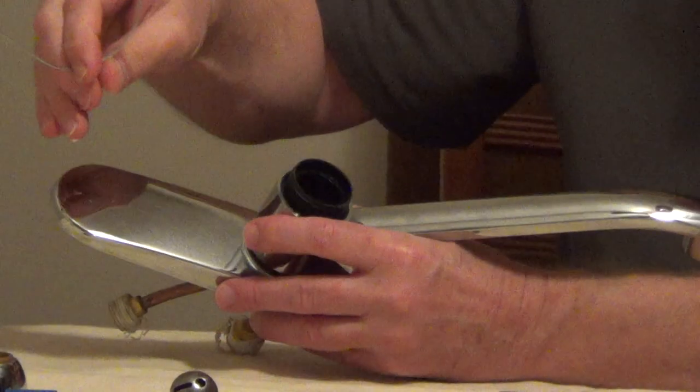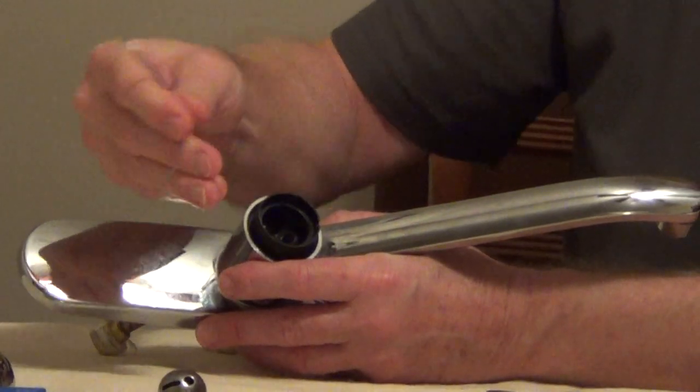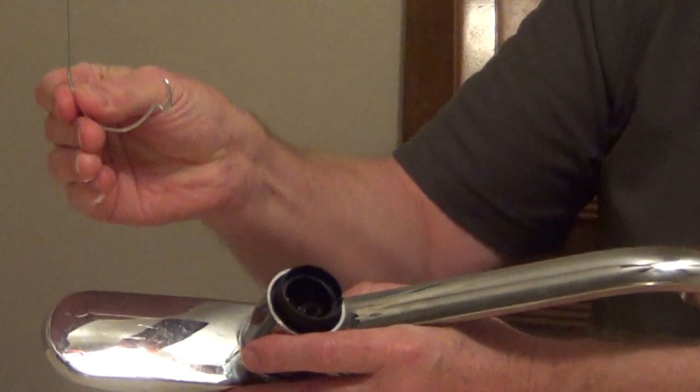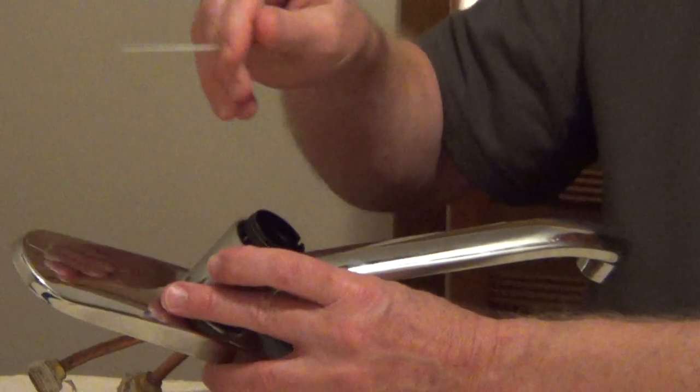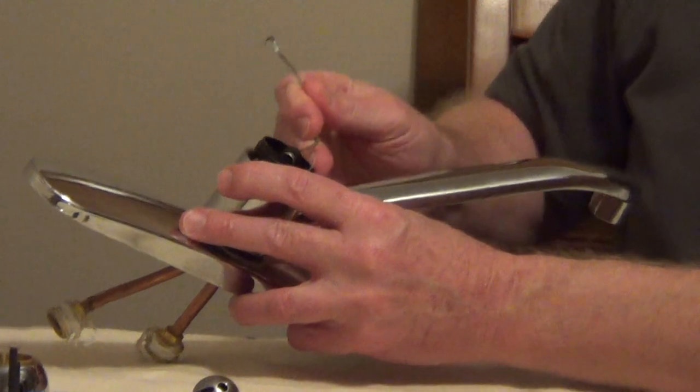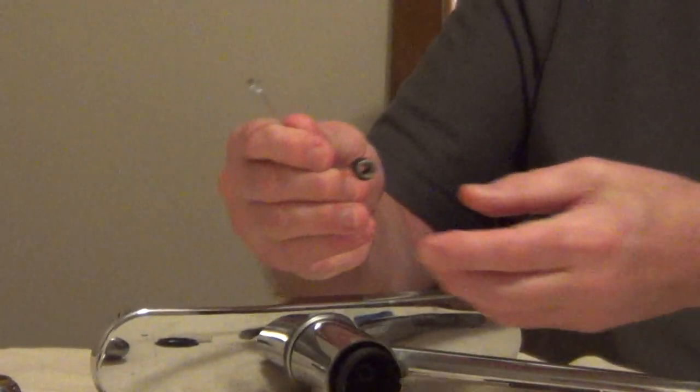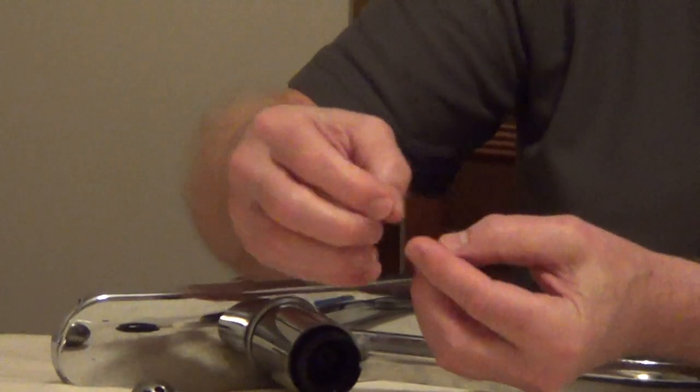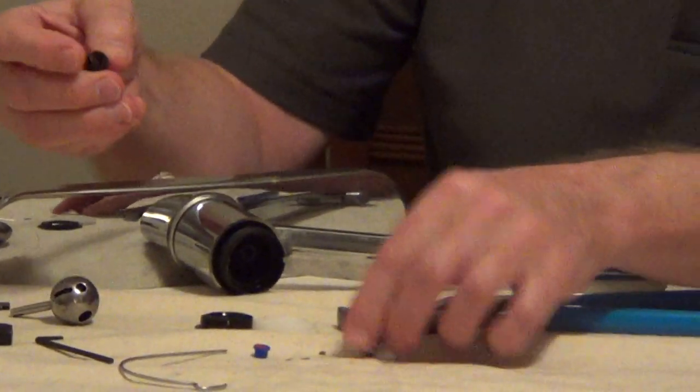You're just going to use any little thin tool. I like these monkey hooks—this is actually to hang on the wall. These monkey hooks do a nice job just to get in here. We're going to pull out the two seats. You're going to have two seats and two springs that you're going to get replaced.